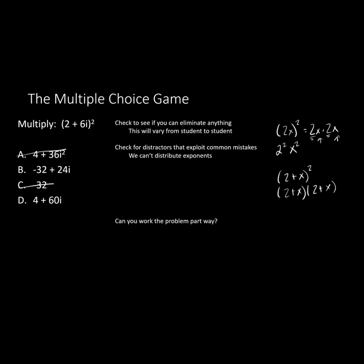Last thing, can you work the problem part way? A student of mine recognized this the other day. I'm going to multiply this with the area model but you might use foiling or some other method. 2 times 2 is 4. 2 times 6i is 12i. 2 times 6i is 12i, and right at that moment a student said it's answer choice B because 12i plus 12i is 24i.